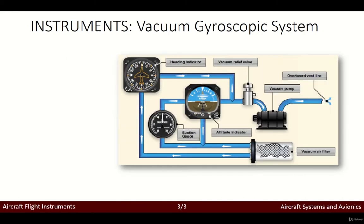In some aircraft, all the gyros are vacuum, pressure, or electrically operated. In other aircraft, vacuum or pressure systems provide the power for the heading and attitude indicators, while the electrical system provides the power for the turn coordinator. It depends on the design of the aircraft, however most aircraft have at least two sources of power — either pressure, vacuum, or electrical — to ensure at least one source of bank information is available if one power source fails, for redundancy.